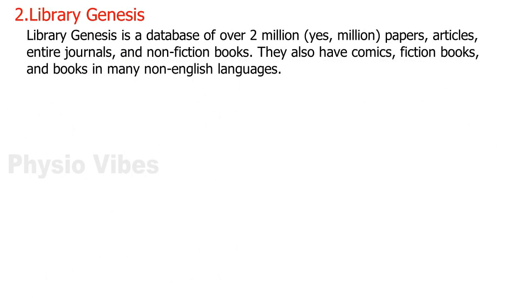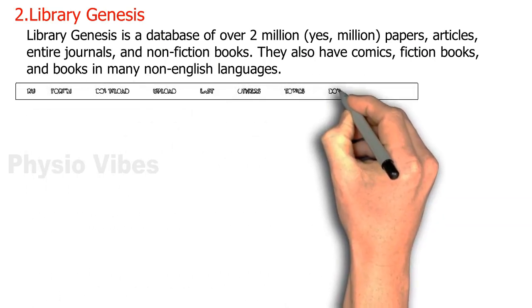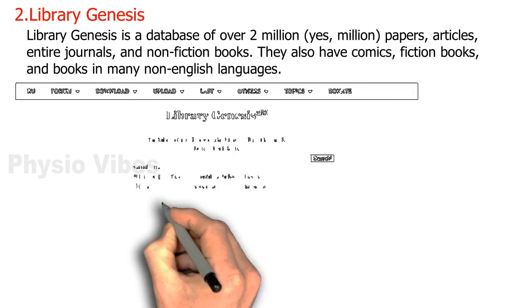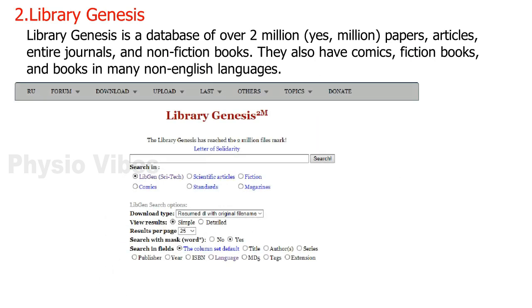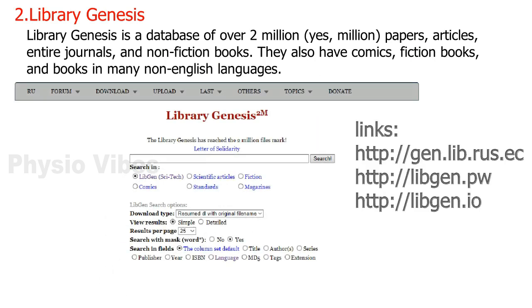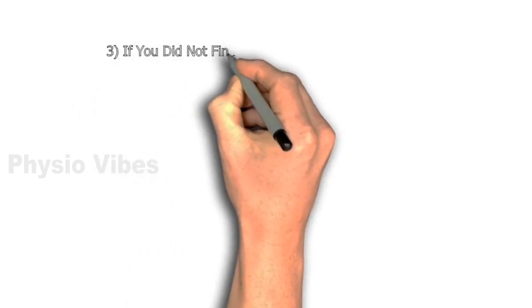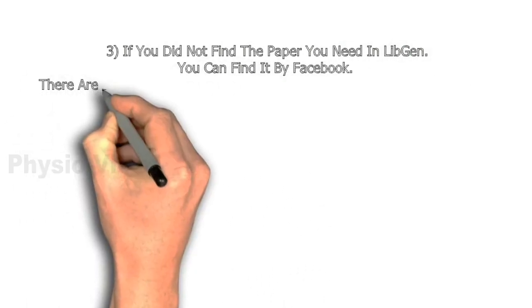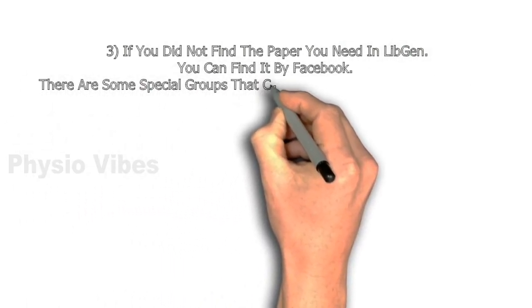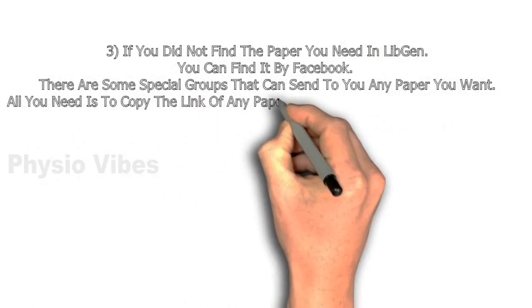The second one is Library Genesis. Library Genesis is a database of over 2 million papers, articles, entire journals, and nonfiction books. They also have comics, fiction books, and books in many non-English languages.